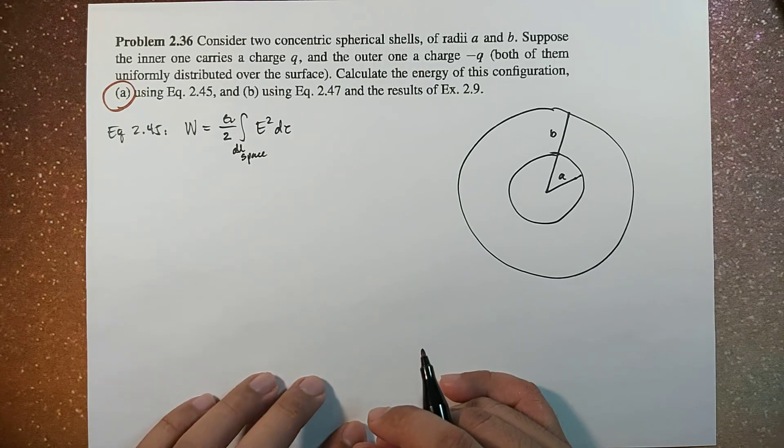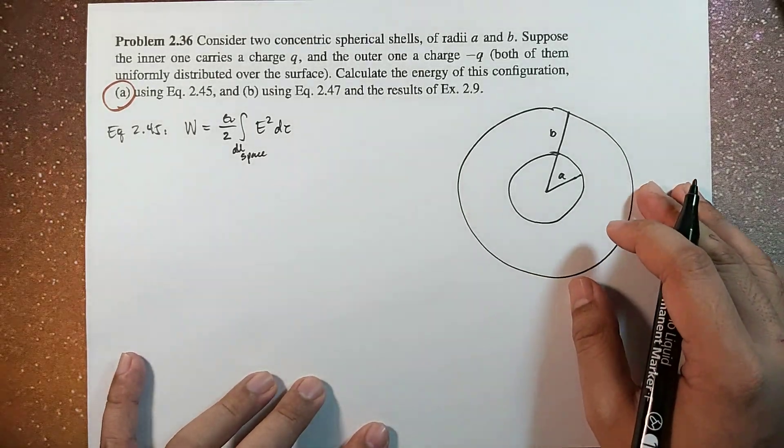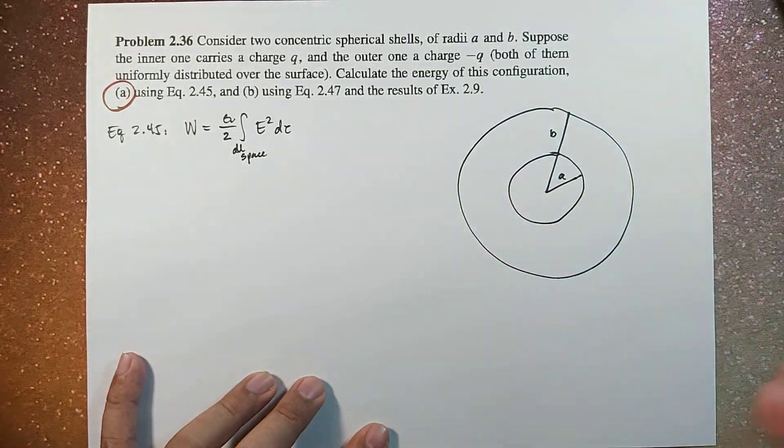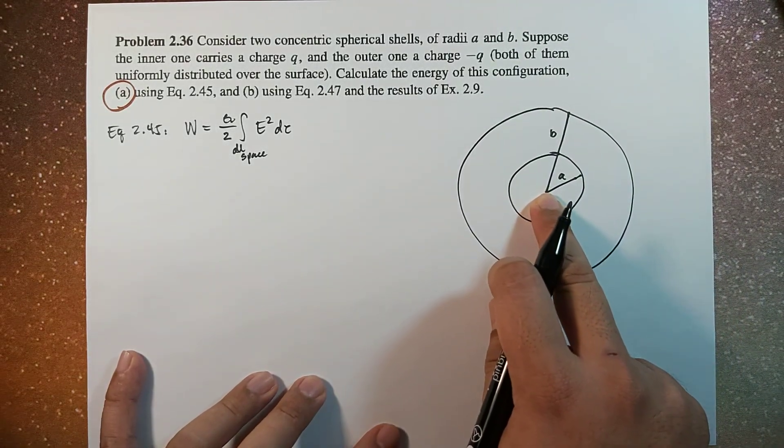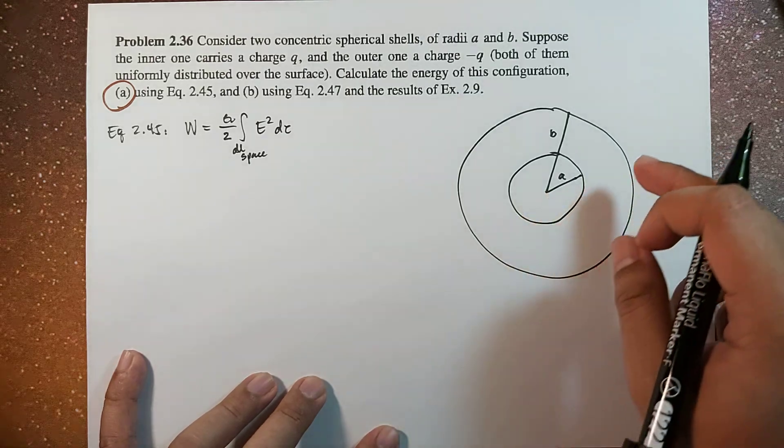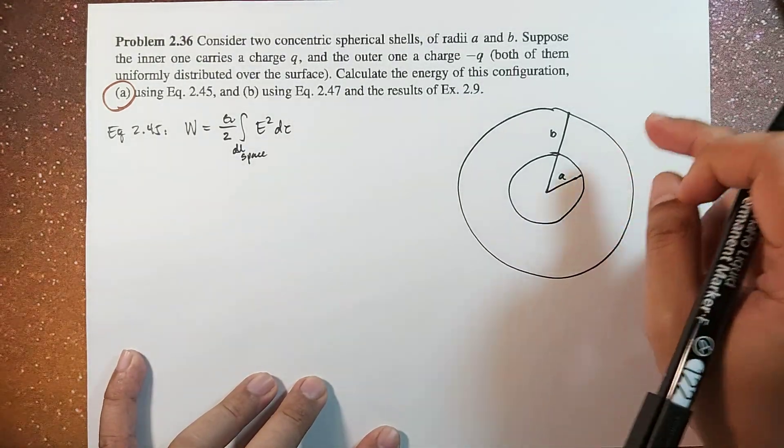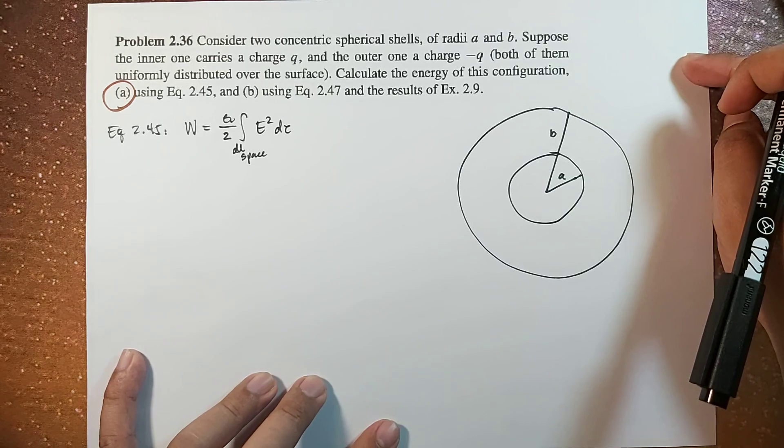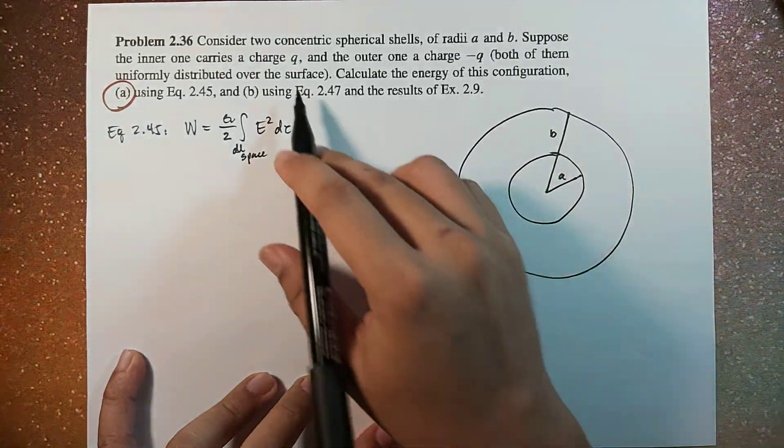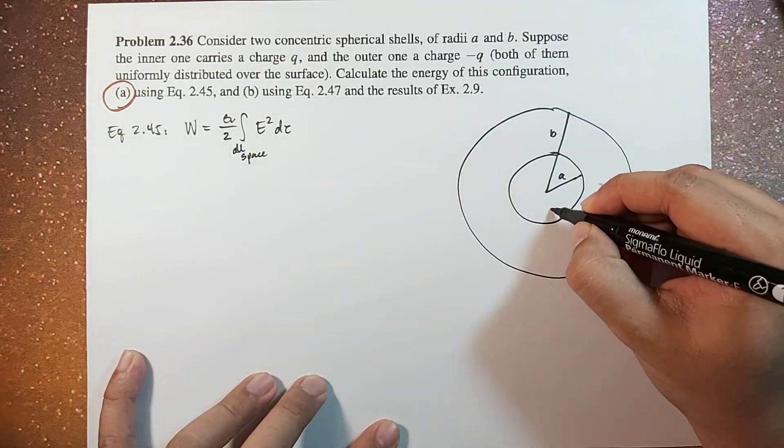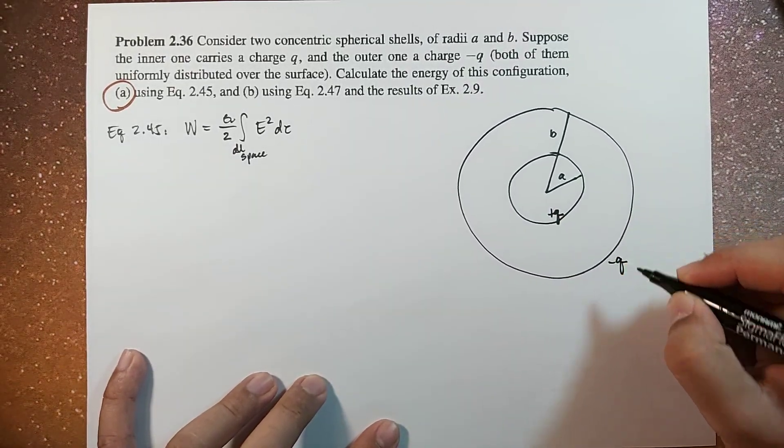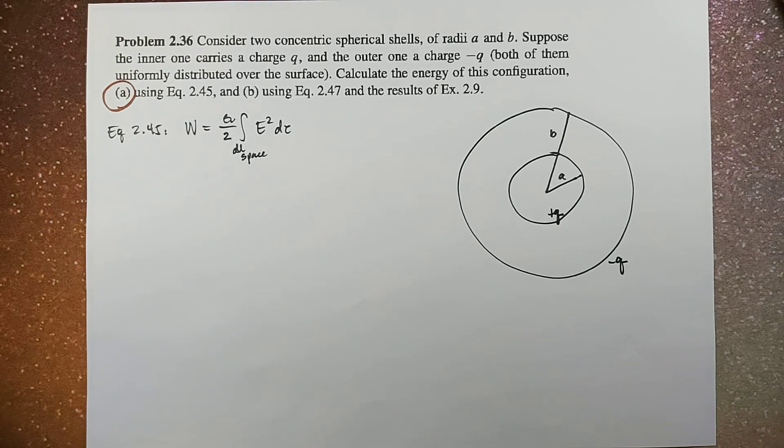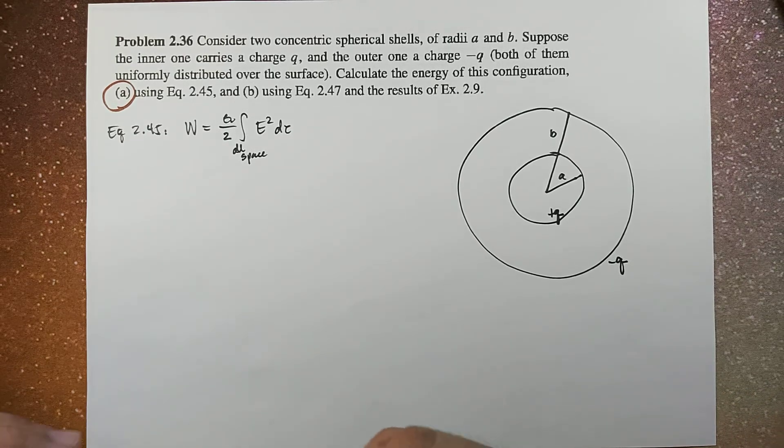So just like in our previous example, we need to find the electric field for all possible regions. In this case, inside the inner shell, between the two shells, and outside of the outer shell. It's mentioned here that the inner one has a positive charge Q and the outer one has a negative charge Q. So we have three regions.